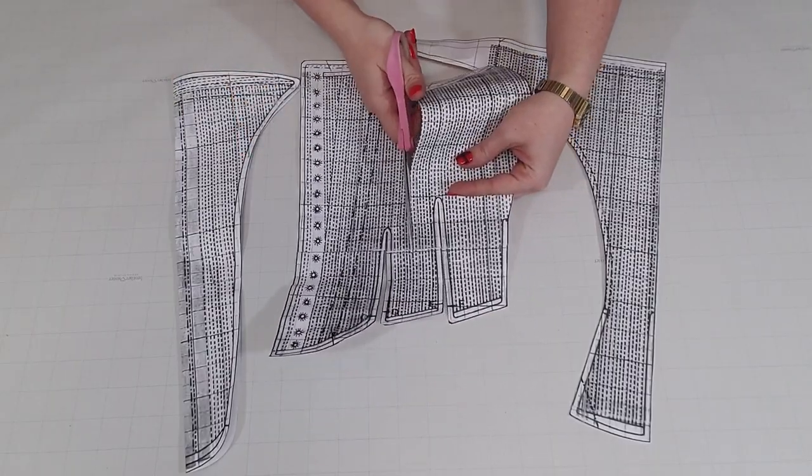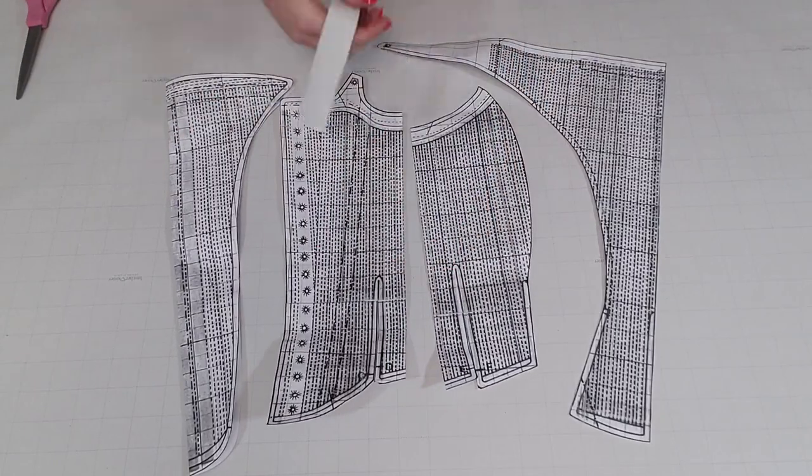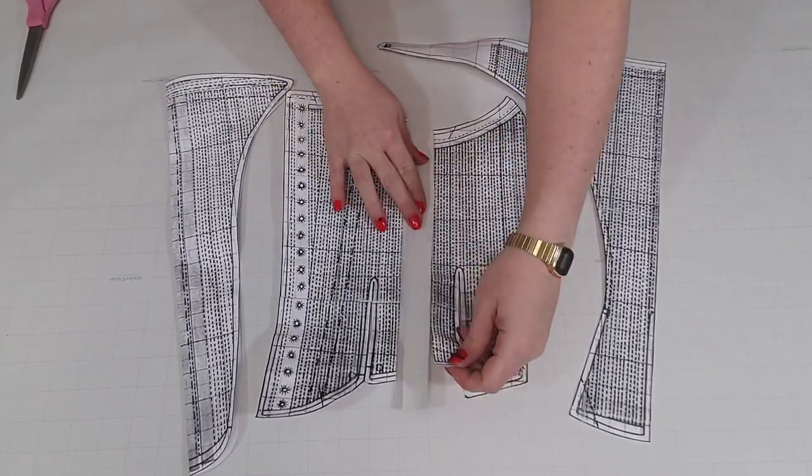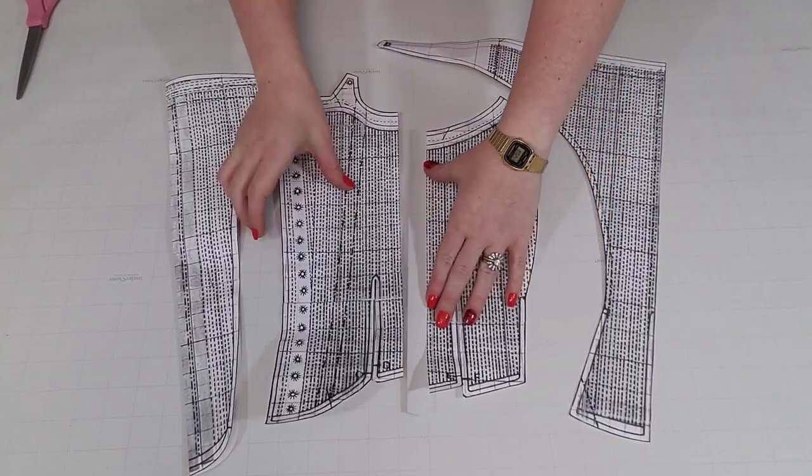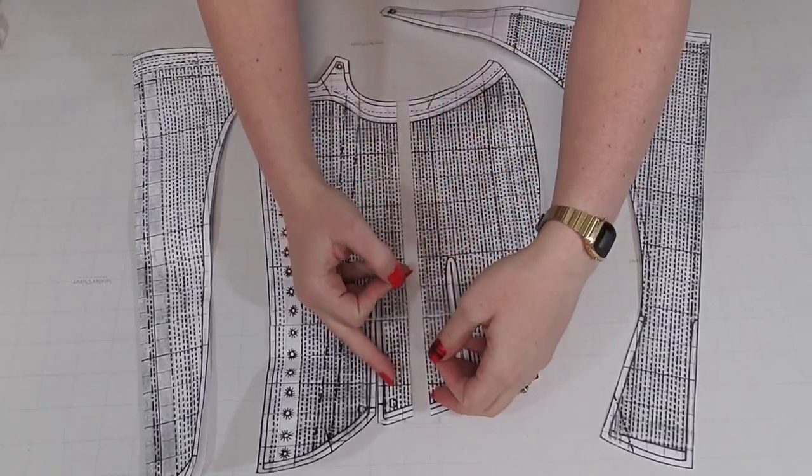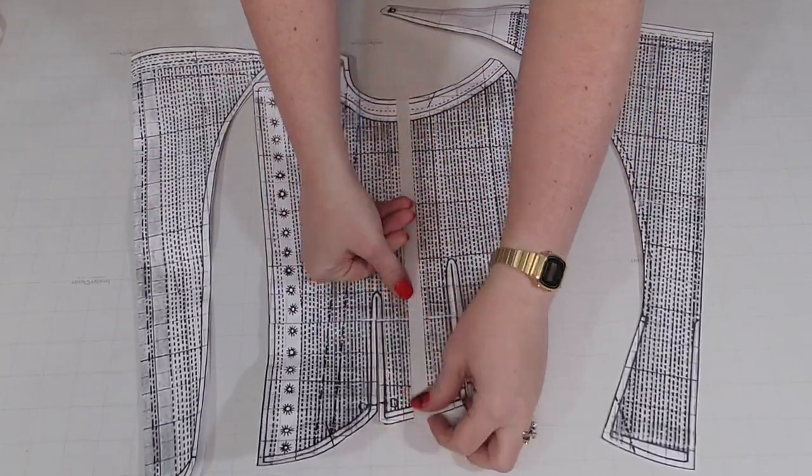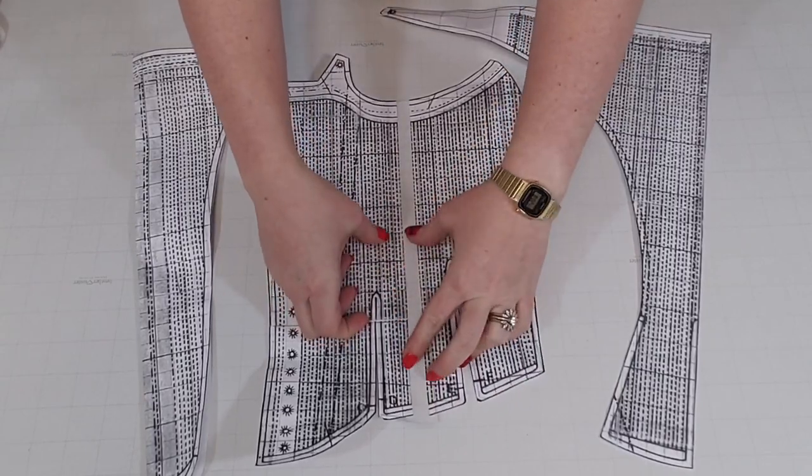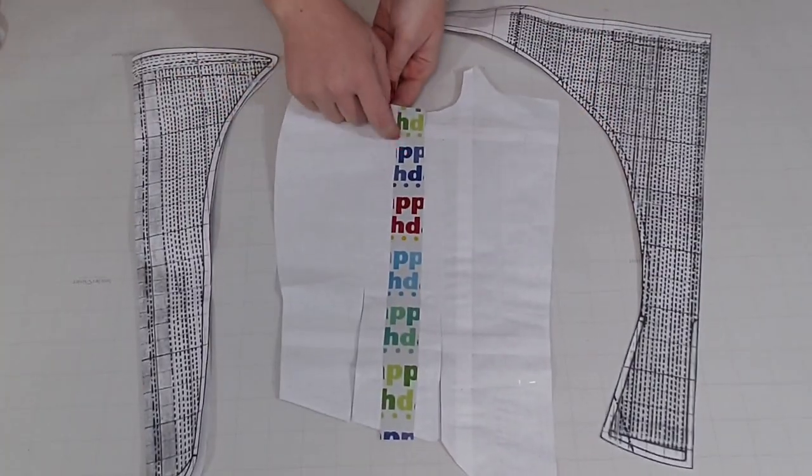It's pretty easy, just cut down the length of the pattern and then insert a strip of paper. After accounting for overlap, I'm adding about half an inch here. Tape it down to keep everything in place, and for anyone curious, I'm using wrapping paper to expand my pattern. Happy birthday!